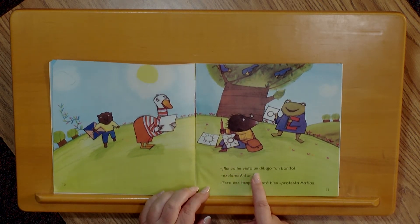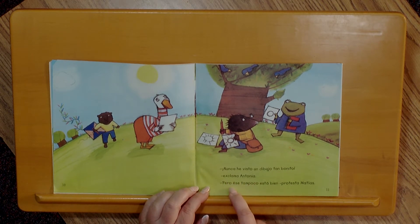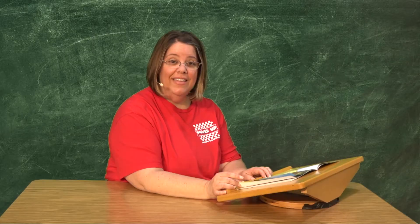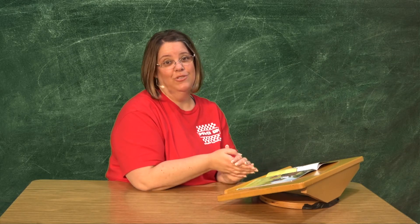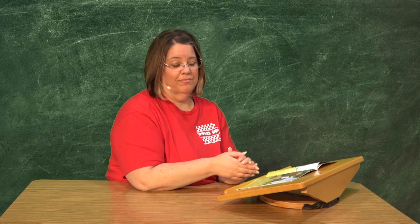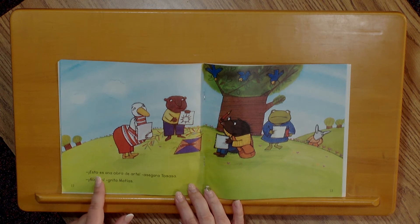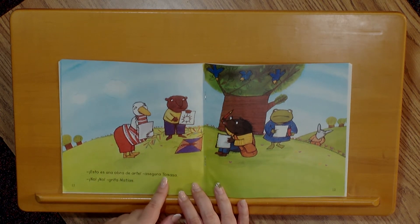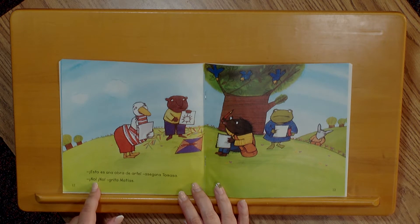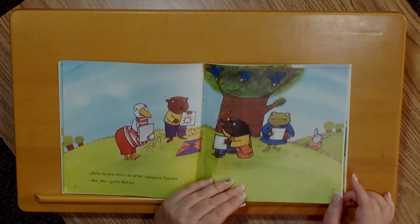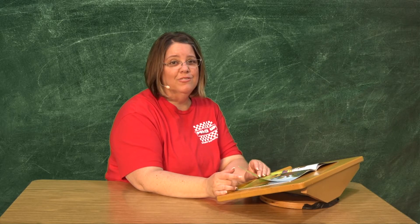Nunca he visto un dibujo tan bonito, exclama Antonia. Pero ese tampoco está bien, protesta Matías. Llegó otro animalito a decirle algo bonito acerca de su dibujo, pero a Matías no le gustó. Pobrecito Matías. Esto es una obra de arte, asegura Tomasa. No, no, grita Matías. Sus amigos les encantan sus dibujos, pero a Matías no le gusta mucho.